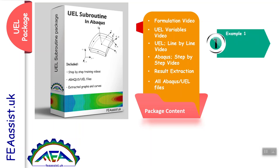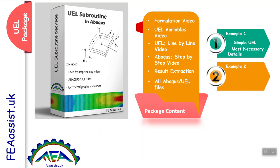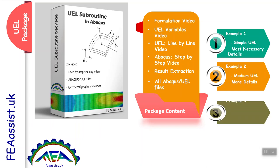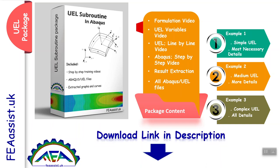This package includes three examples. Example number one is a simple UEL where the most necessary details — like RHS and A-matrix — are explained. Example number two is a medium UEL with more details. Example number three is a complex UEL in which all details are explained. It is a systematic way to learn the complex UEL subroutine. You can download this package by the link in the description or directly go to feassist.uk.